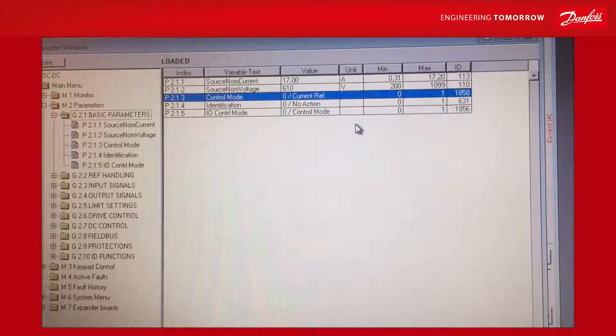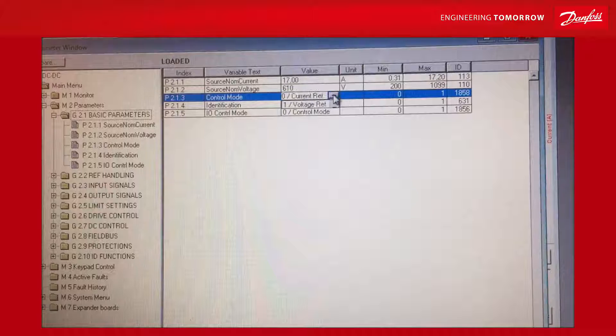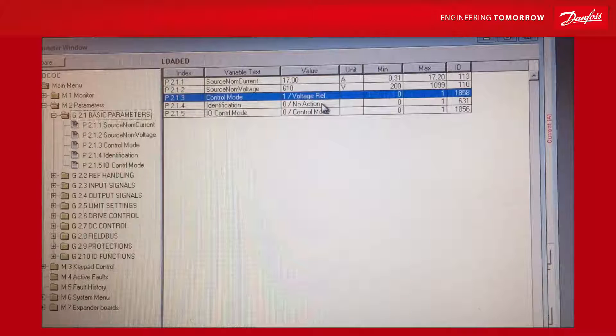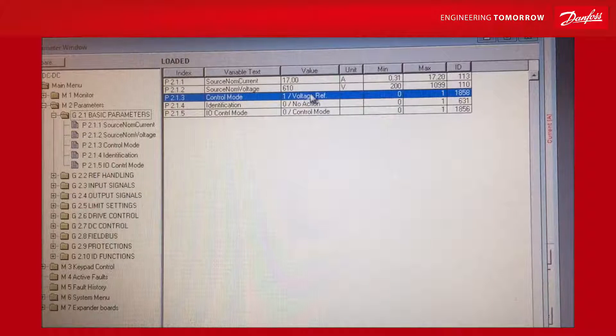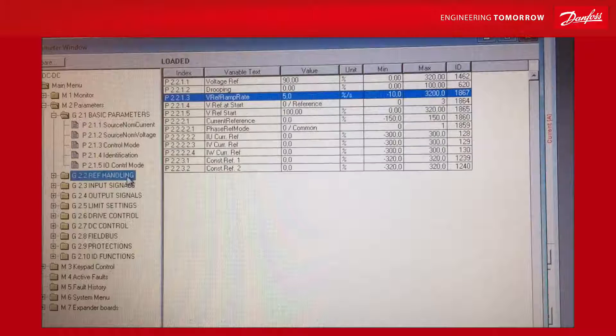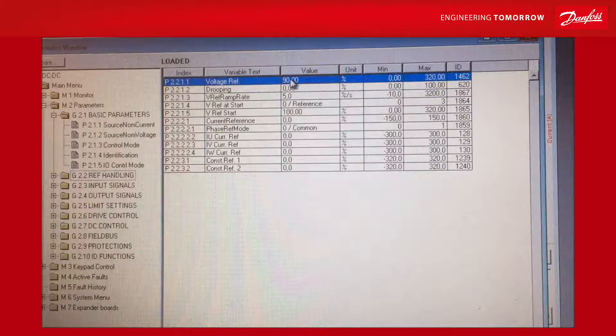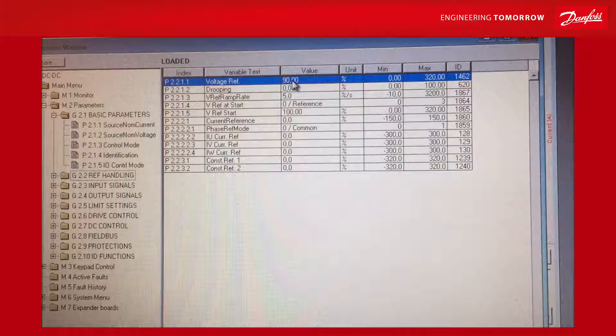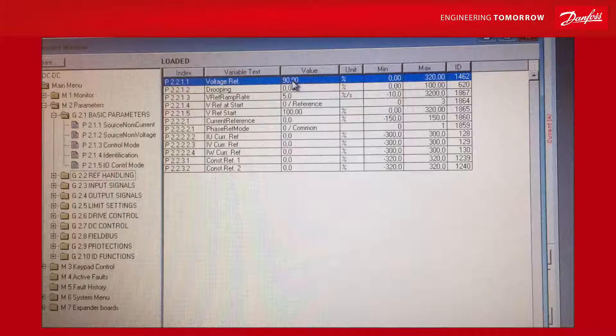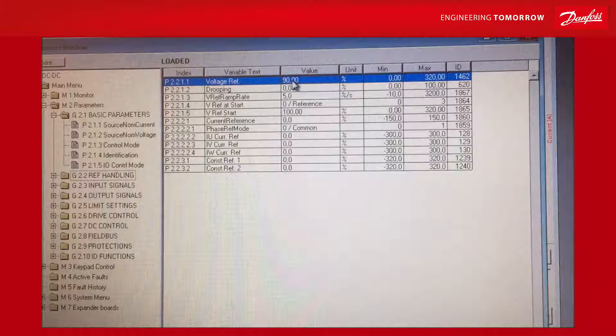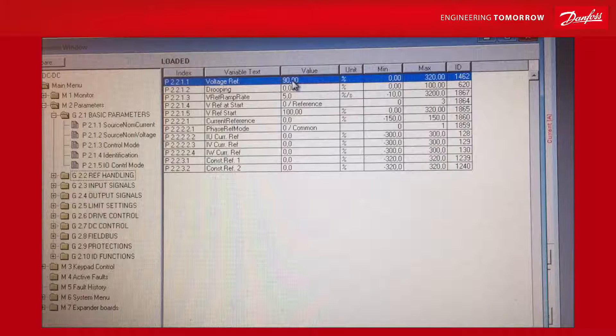Now we want to change from current reference mode into voltage reference mode. We change it to voltage reference. And then we go to the reference handling. Because here is the reference set. Now I want to aim for 90% of the source voltage. Which will give some current going on in the system.